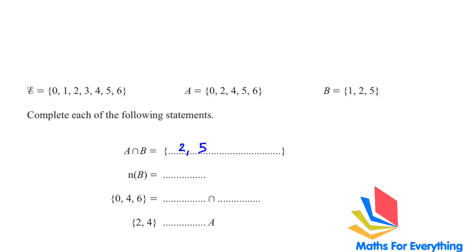Then we have n(B) and n if we have outside the bracket it means we count the number of elements in B. 1, 2 and 3. The next one set 0, 4, 6 is equal to. Let's look here we had set 0, 4, 6. This is B and this is our universal set if you remove from B. 1, 2 and 5. We are left with 0, 4 and 6.